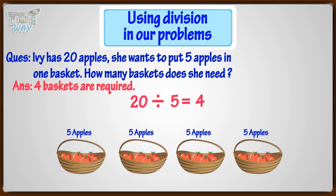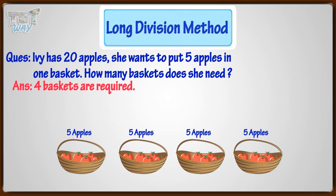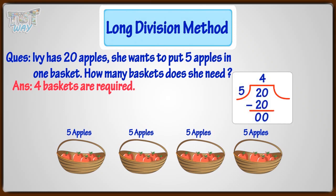You can also use the long division method. Here, quotient 4 means 4 baskets are required.